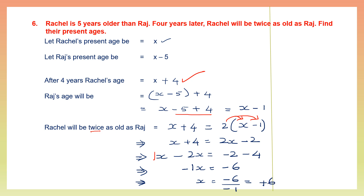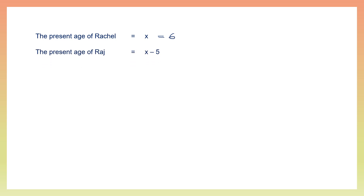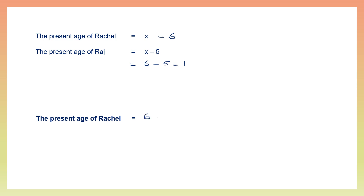We found x to be 6. Rachel's present age is x, which is 6 years. Raj's present age is x minus 5, that is 6 minus 5, which is 1. So Rachel is 6 years old and Raj is 1 year old.